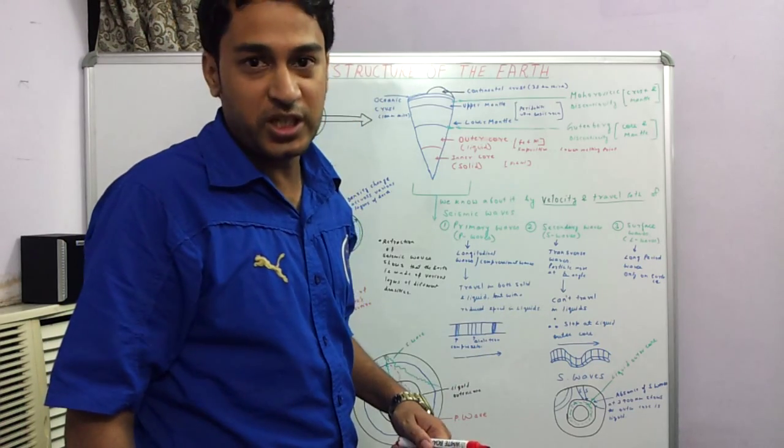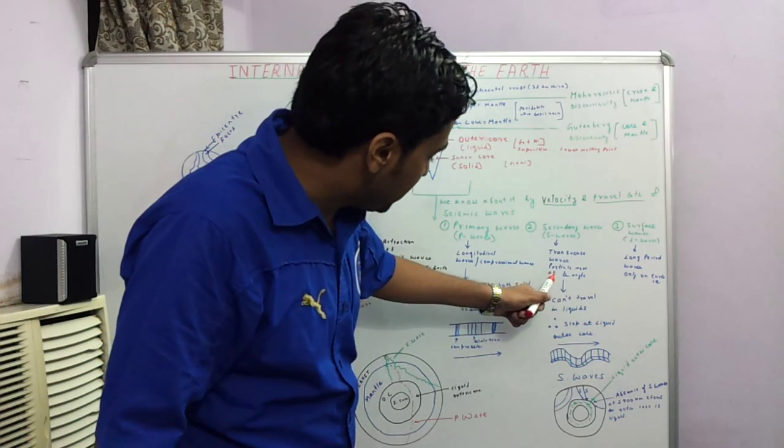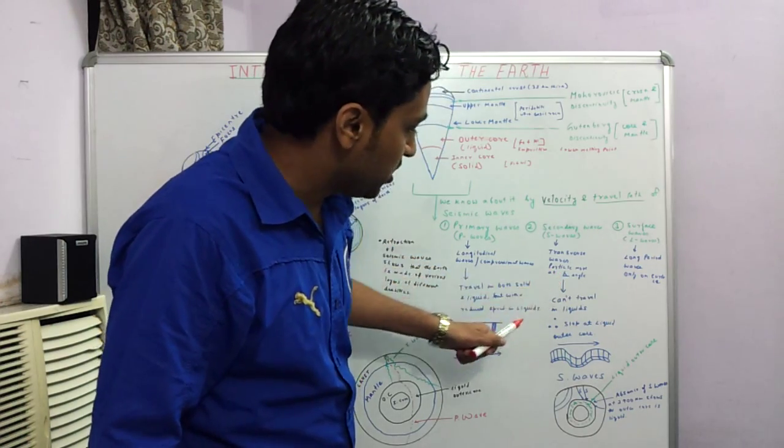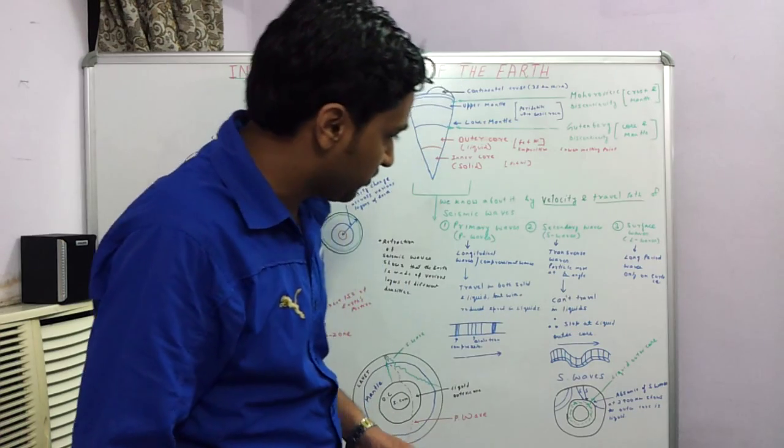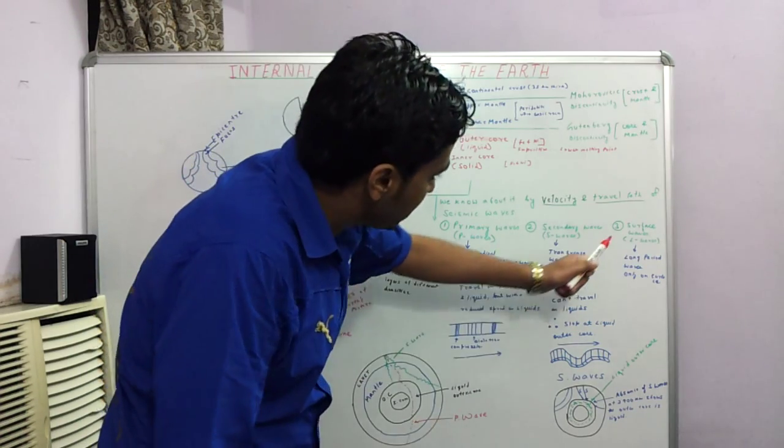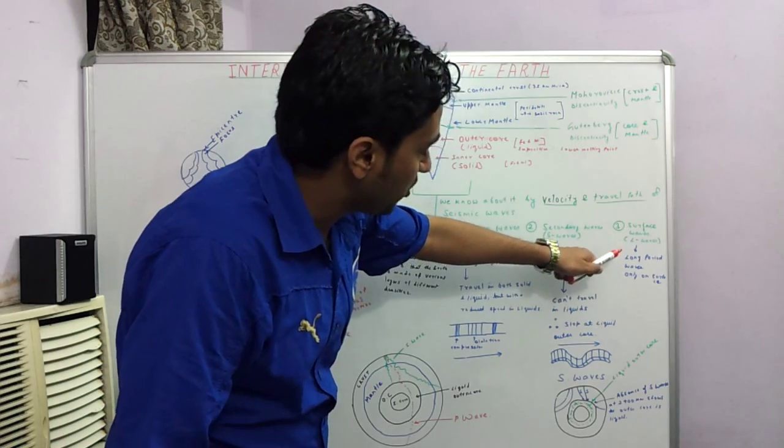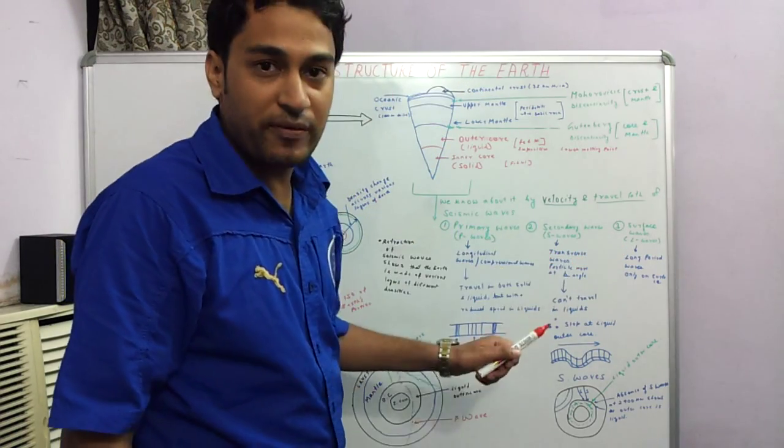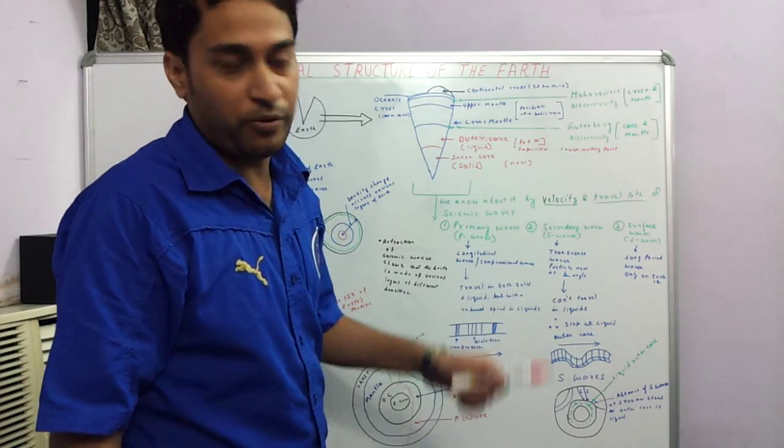Because liquids do not have shear strength. And these S waves travel at right angle to the direction of the propagation of the wave. And the third kind of waves are the L waves or the surface waves. These are also called long period waves. These can travel only on the outer surface of the earth.